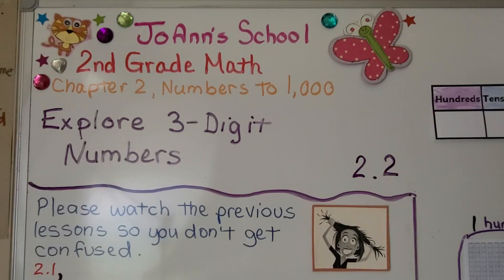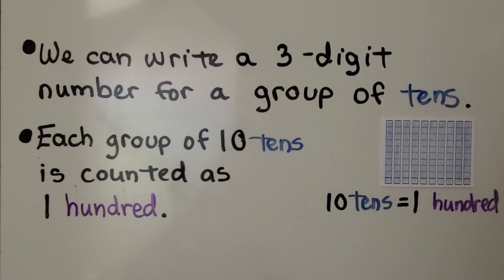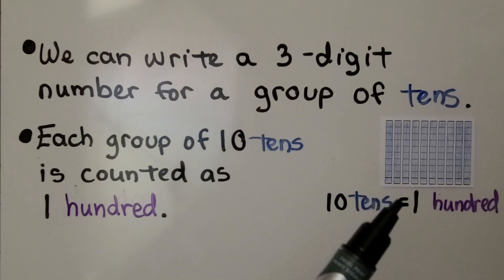Grade 2 math 2.2: we're going to explore three-digit numbers. We can write a three-digit number for a group of tens. Each group of tens is counted as 100. Here we have one group of ten tens — that's 100.